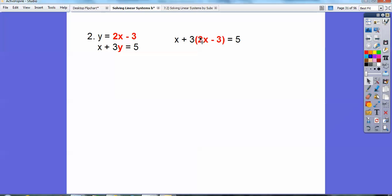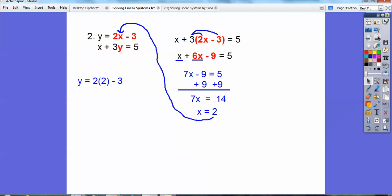We're going to go ahead and distribute the 3 through. Now we're going to get x plus 6x minus 9 equals 5, and then go ahead and combine the like terms. 7x minus 9 equals 5. We're going to add 9 to both sides, and then we get 14, so x equals 2. And then we're going to go ahead and put x right back up here where this x is. Okay, so we're going to plug in x equals 2 right there.